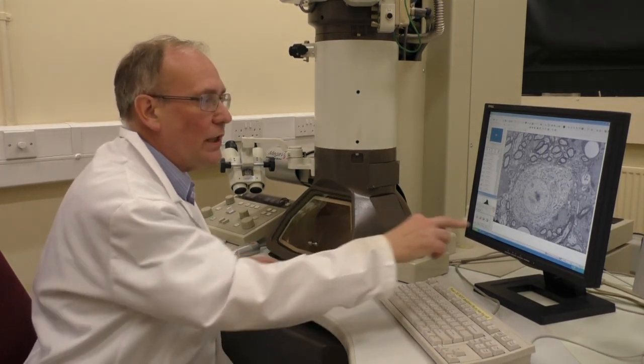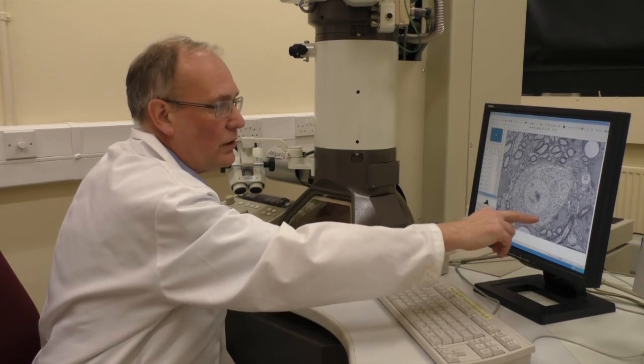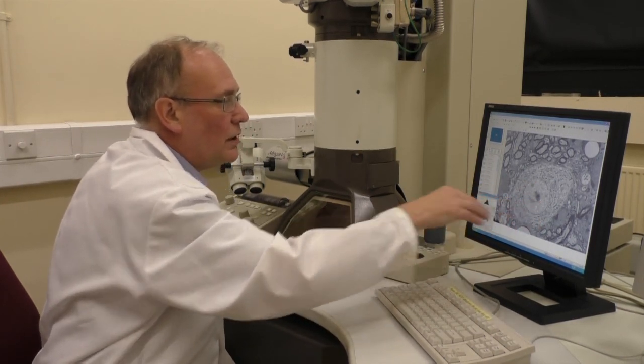Here, for example, you can see a cell. This is in a section of brain tissue, so this is a neuron, or a nerve cell, and you can see its nucleus in the centre.